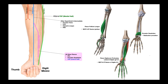Now back to flexor digitorum profundus. The medial half is innervated by the ulnar nerve; the lateral half is innervated by the median nerve via the anterior interosseous nerve. Overall it allows flexion of digits two through five at the metacarpophalangeal and interphalangeal joints. However, the lateral half is mainly responsible for flexing digits two and three — definitely digit two, the index finger, with digit three having some shared function. In general, digits two and three are controlled via the median nerve, and digits four and five via the ulnar nerve.